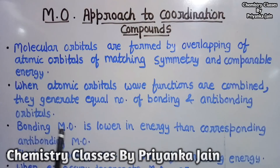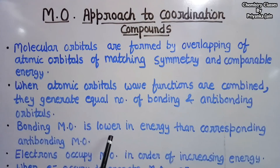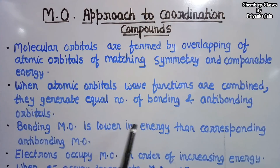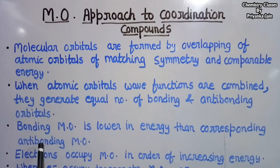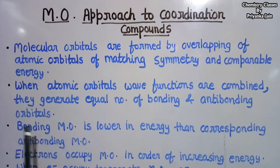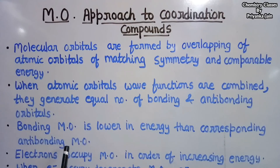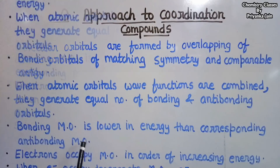The bonding molecular orbital is lower in energy, so it is highly stable compared to the corresponding anti-bonding molecular orbital. The energy of the bonding molecular orbital is lower, while that of the anti-bonding molecular orbital is higher.